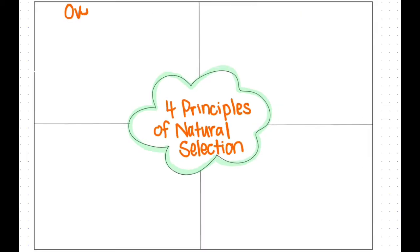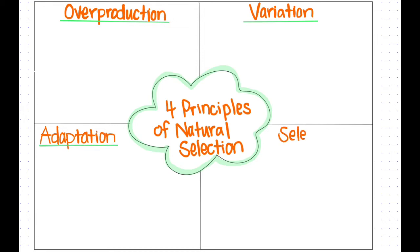Welcome to Sit Back and Teach. Today's topic is the four principles of natural selection. Remember that natural selection is the process that causes evolution to occur. It is what makes changes in species happen, and there are four main principles that allow natural selection to happen in the wild: overproduction, variation, adaptation, and selection.